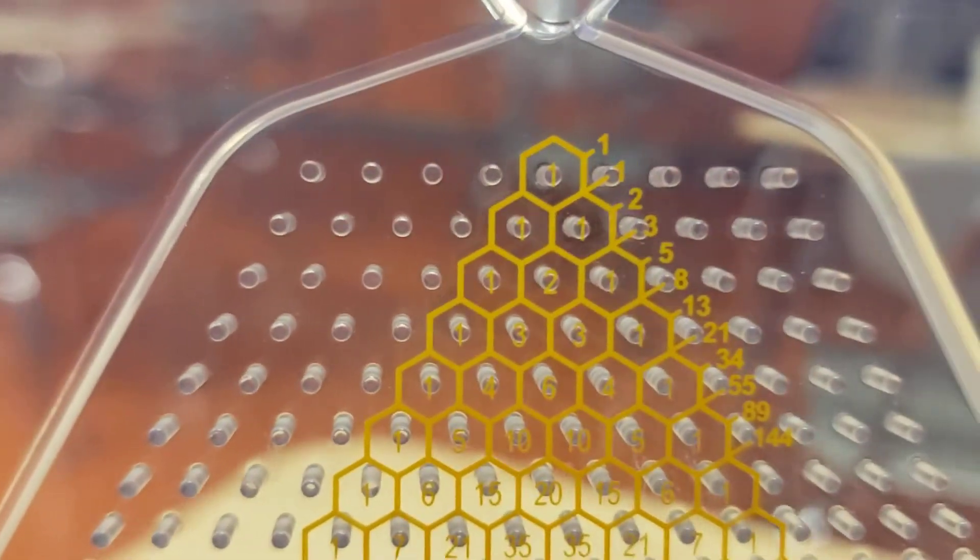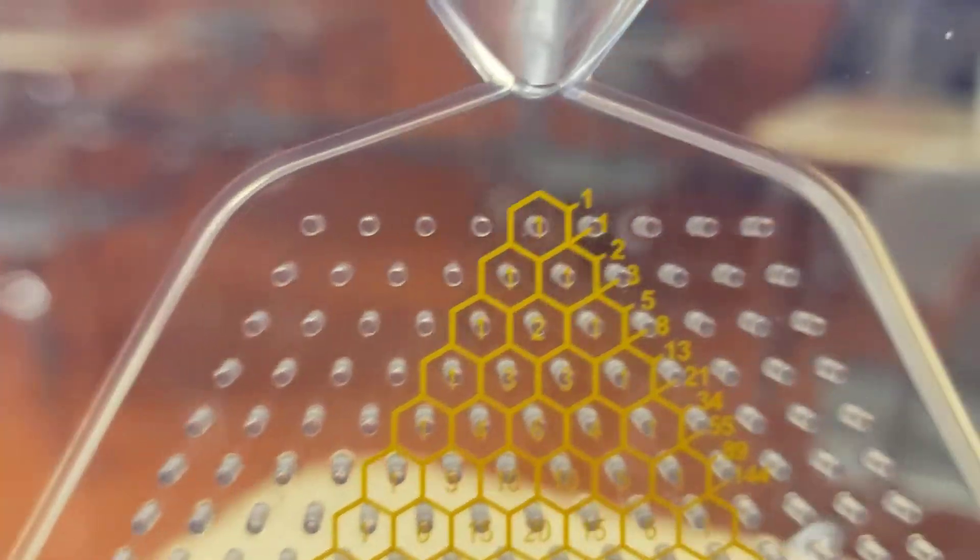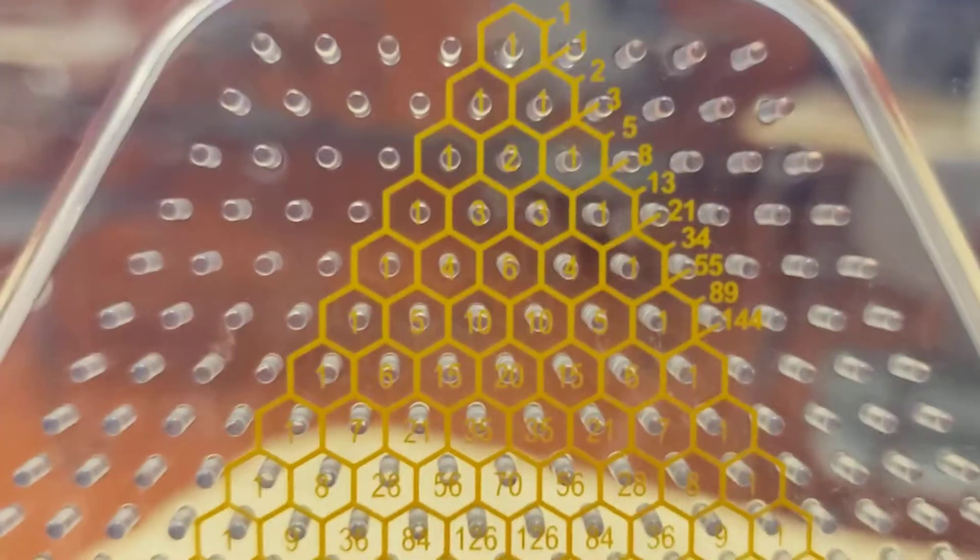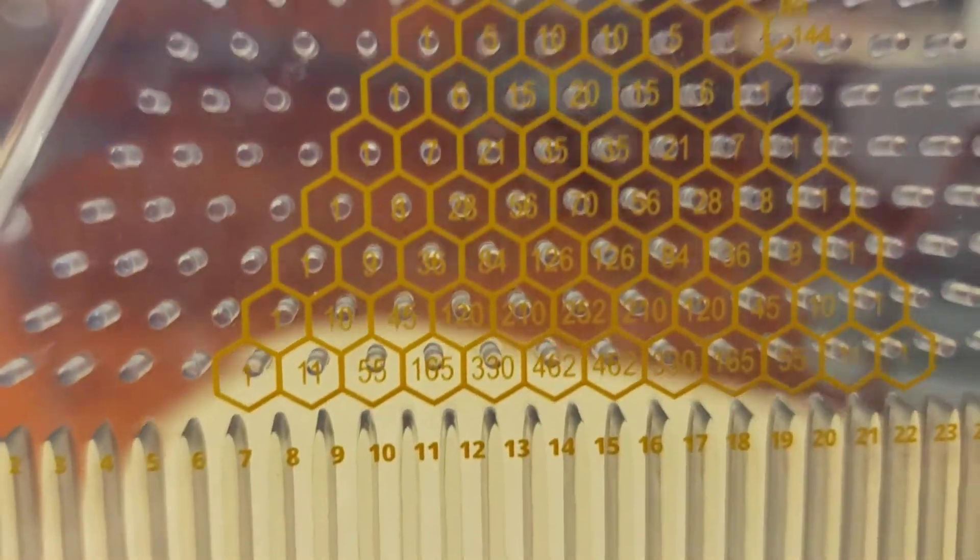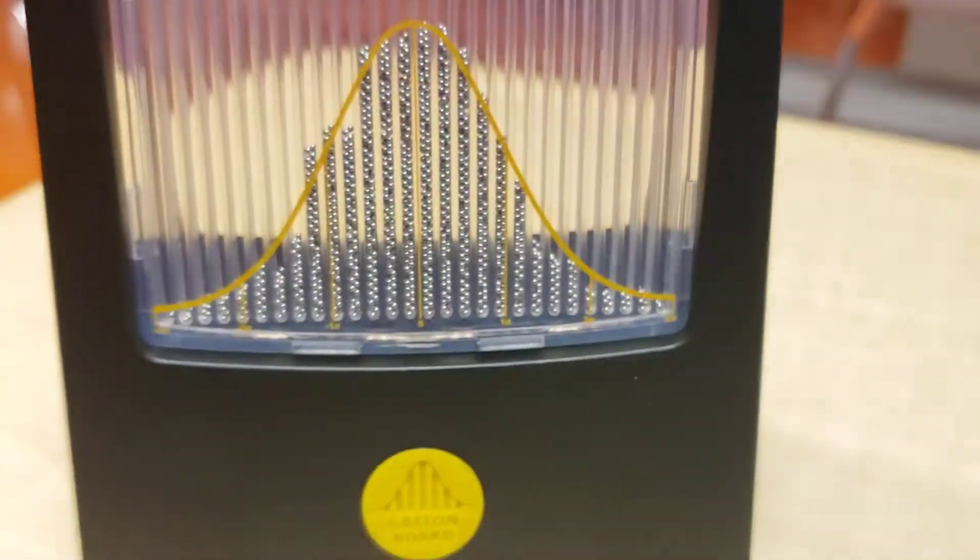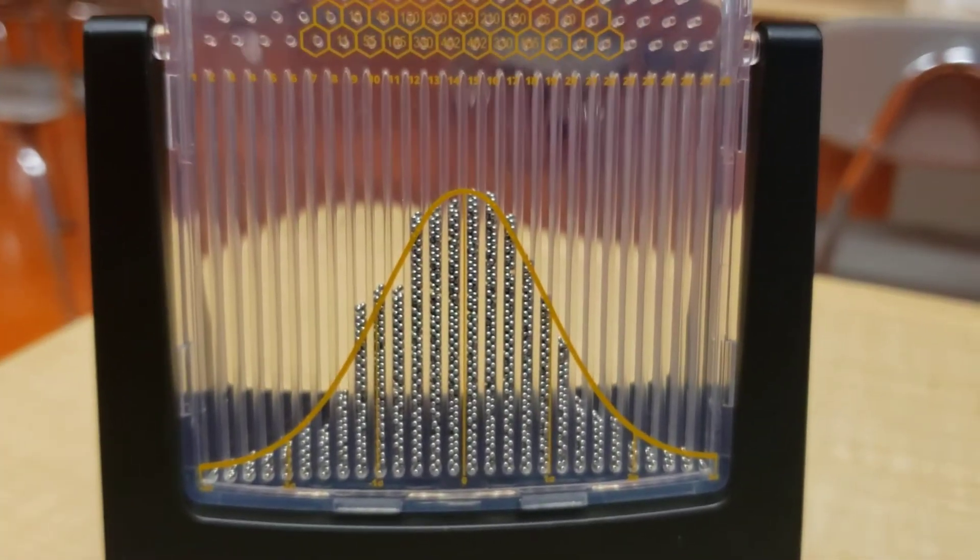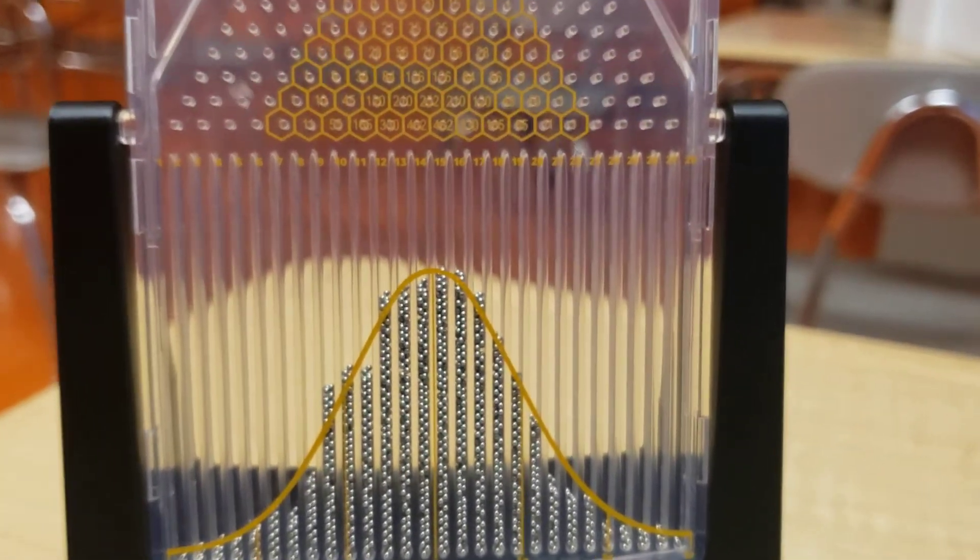Then they repeat that choice on the next column. They can go left or right. And then they just have to continue making those choices, those binary choices, all the way down. And what happens here is the majority of those pegs, the most outcomes are going to be in this center spot right here.